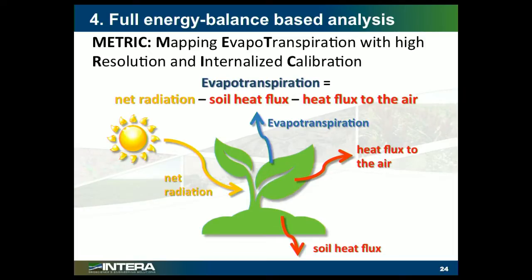The fourth and final method is kind of the Cadillac methodology of satellite remote sensing analysis. This is the method you want to use if you really want to do a regional analysis and quantify consumptive use over a large area — you need to apply an energy balance type method. In this case we've applied something called METRIC, which is just an acronym for the method. It was developed by Rick Allen at the University of Idaho. The concept is pretty simple: we know what time the satellite image was taken, so we know where the sun was in the sky, the sun angle, and the amount of solar energy coming into the surface at that time.